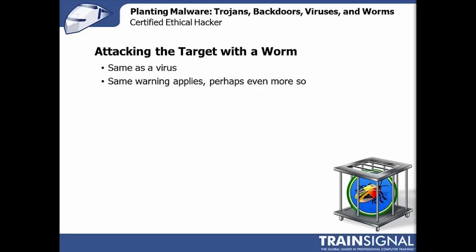Attacking a target with a worm is virtually like a virus, except it's even more likely to spread because all it's really doing is talking on the network. A lot of what it does isn't just broadcast storming — it's self-spreading. It has a higher focus on spreading itself than a virus does, so it can potentially affect many more machines very, very fast.